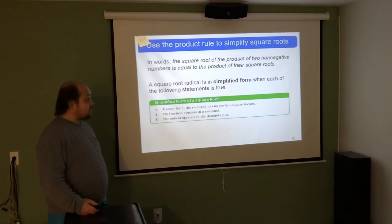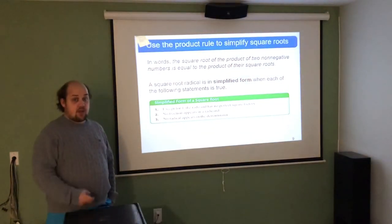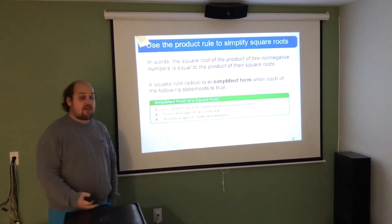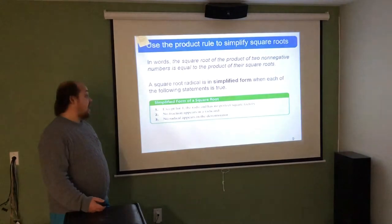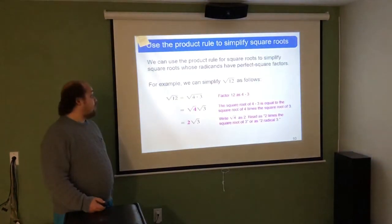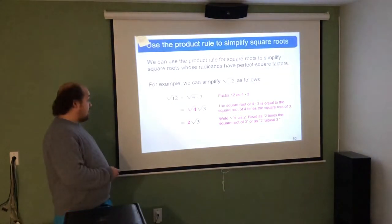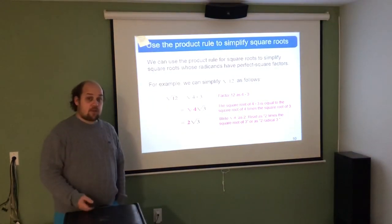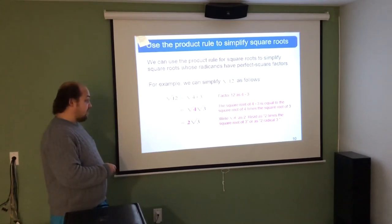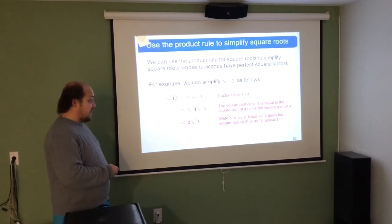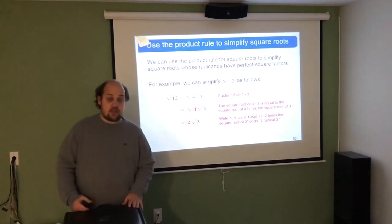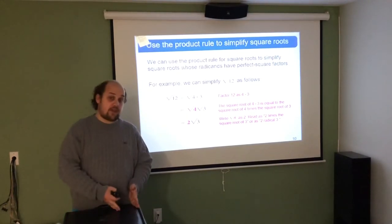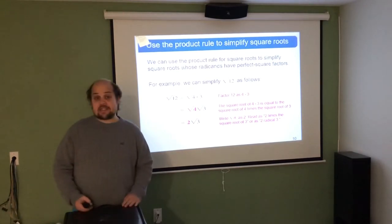A square root radical is in simplified form when each of the following is true: except for 1, the radicand has no perfect square factors; no fraction appears in a radicand; and no radical appears in the denominator. If we break down the root of 12, I can break that into the root of 4 times the root of 3. The root of 4 is the largest perfect square that goes into 12, so it comes out as 2, and the root of 3 stays under the root sign as the remainder.